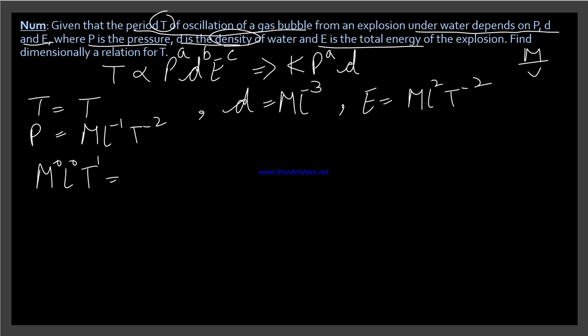This equals K, which is the constant. When we do derivations, we don't write the constant term in between, so I'm writing equal sign and K value here. P's value is M L^-1 T^-2, and d's value is M L^-3.